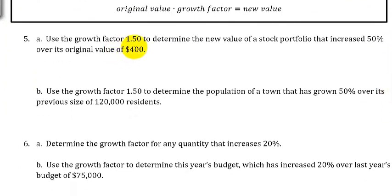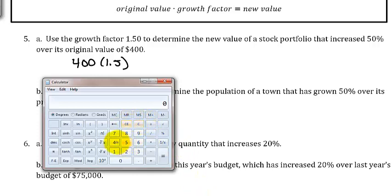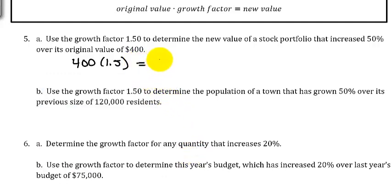Now we'll use a growth factor of 1.5 to determine the new value of a stock portfolio that increased 50% over its original value of $400. It started at $400 and increased by 50%, giving us a growth factor of 1.5. Multiply 400 by 1.5, and that gives us the new value of $600.